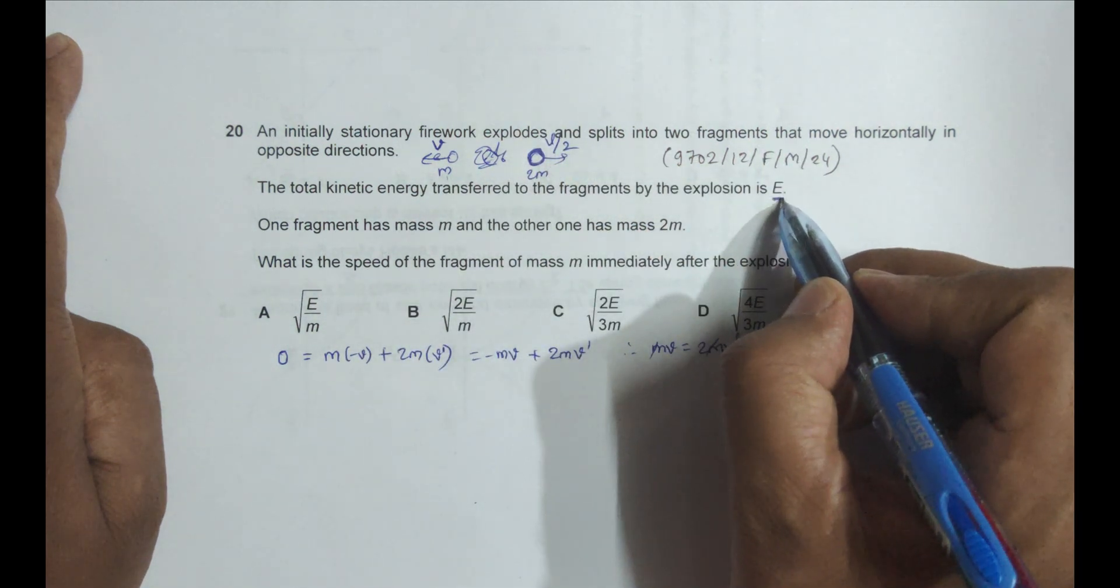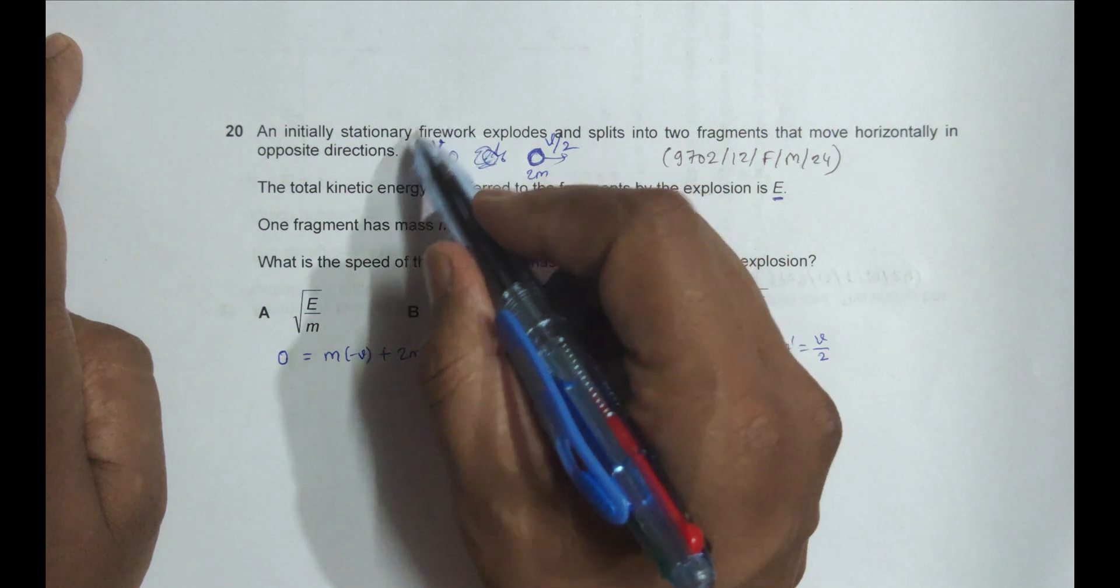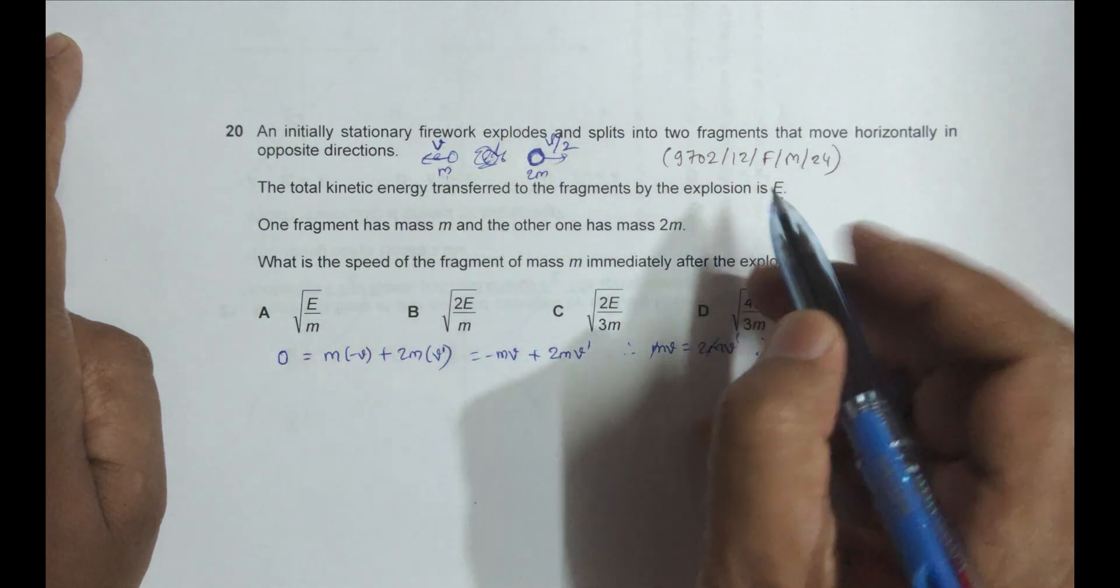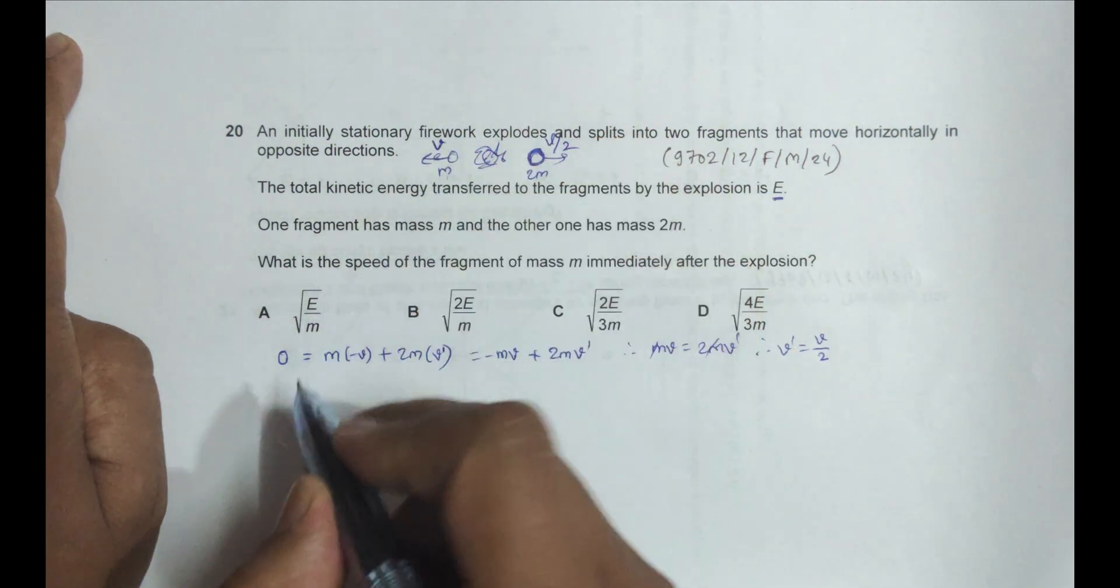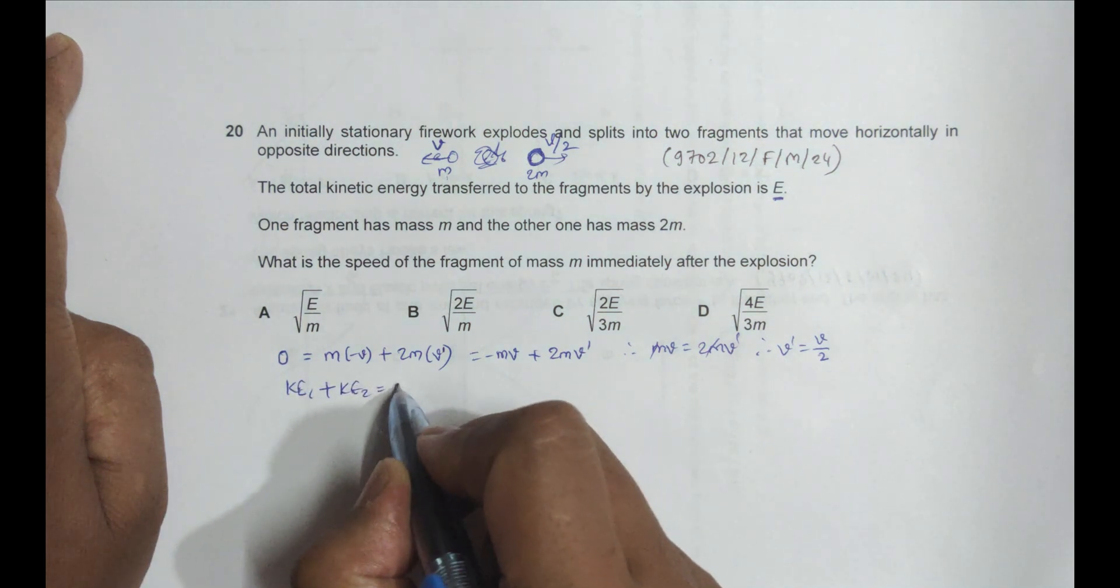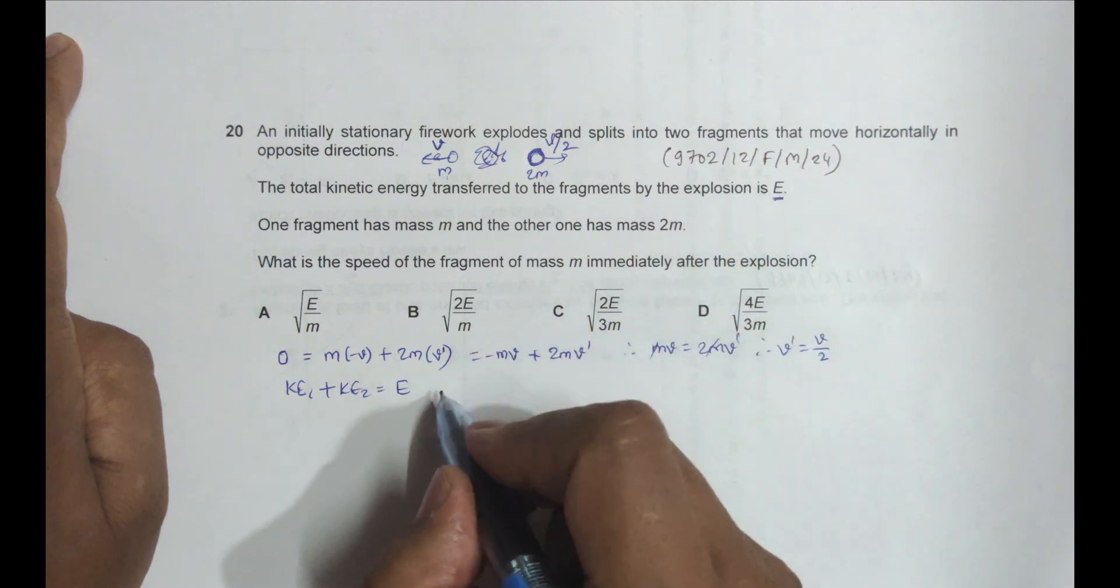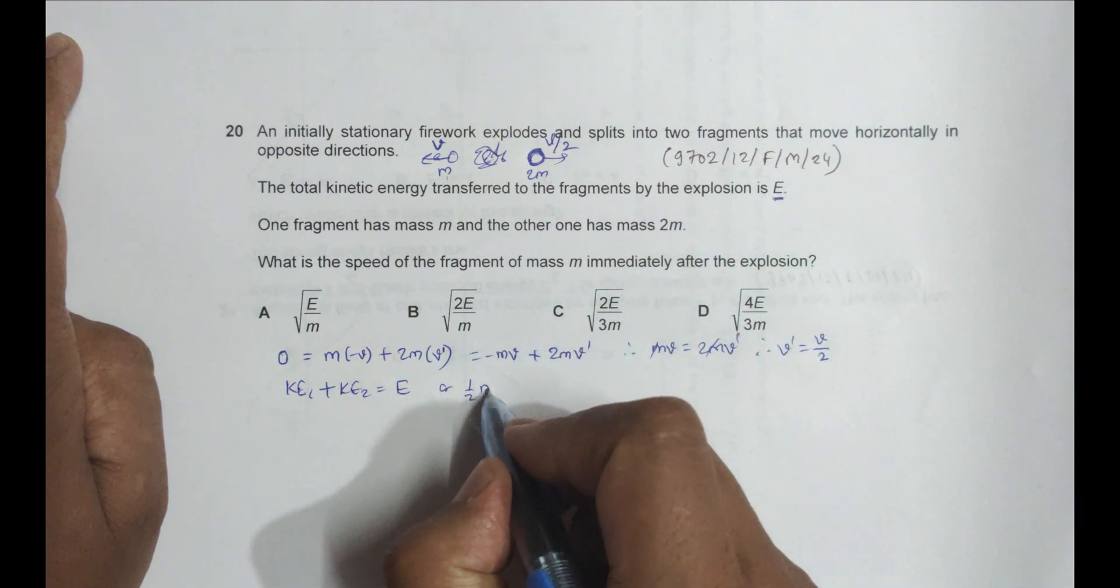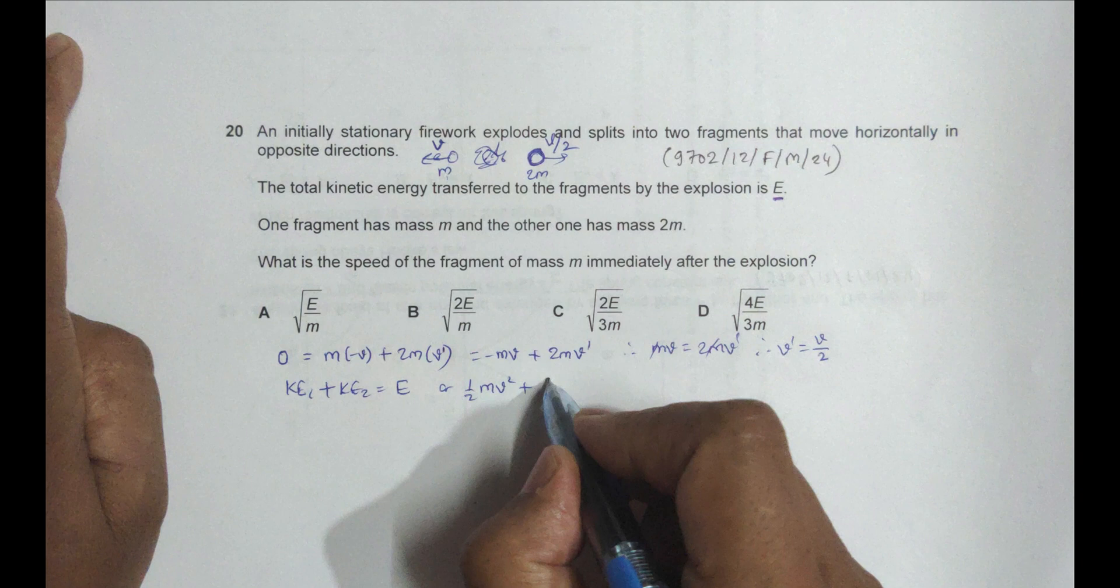So the KE of this body plus this body equals this one. KE1 + KE2 = E, which gives us (1/2)MV² plus (1/2) times mass 2M times velocity (V/2)² equals E.